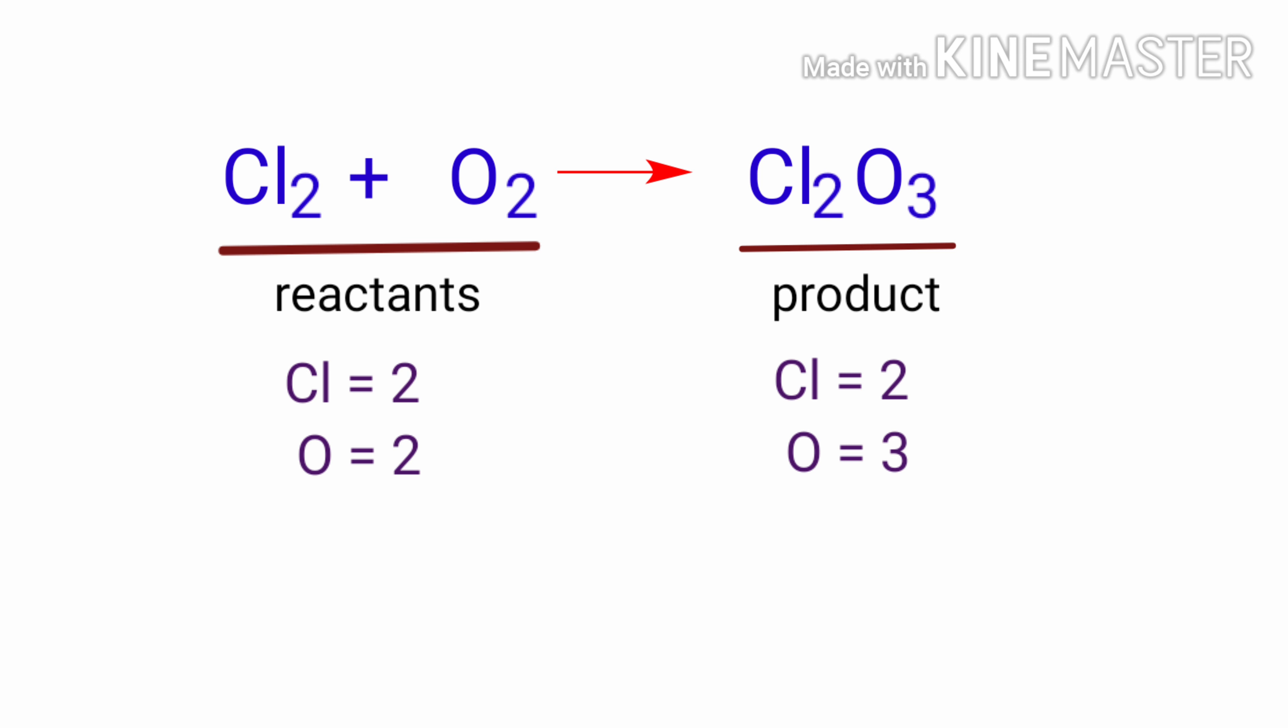To balance the chemical equation, we need to make use of coefficients. A coefficient is a number that we place in front of a chemical formula.